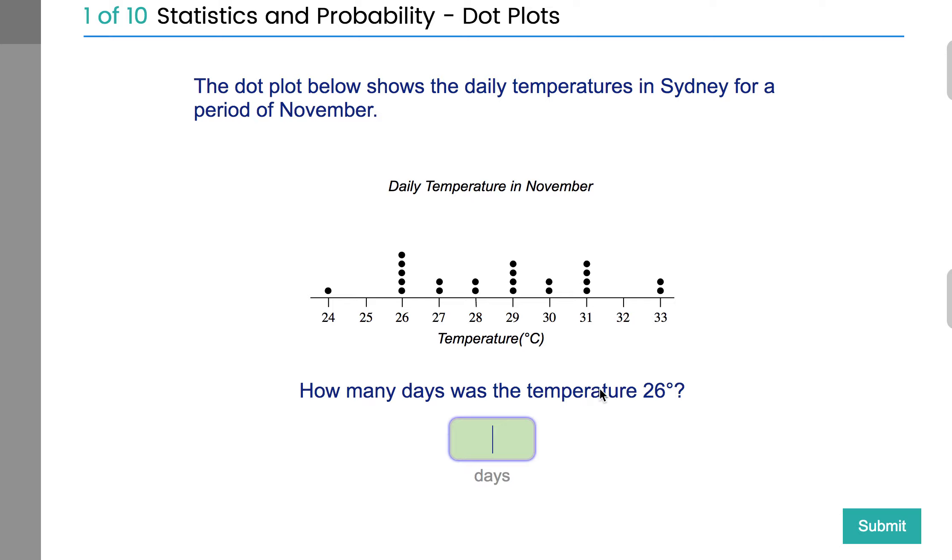How many days was the temperature 26? One, two, three, four, five. Simple as that. Very simple graph to read. Every dot is a data point.